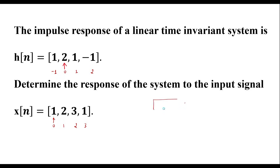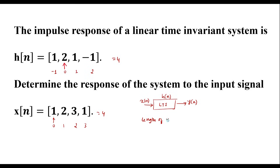This is a LTI system. The impulse response is h of n, the input given is x of n, and we need to find y of n. The length of h of n is 4 and the length of x of n is 4. Therefore, the length of y of n, that is the length of the output sequence, will be 4 plus 4 minus 1, which is equal to 7.